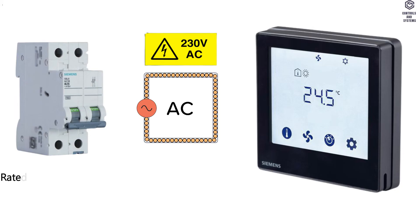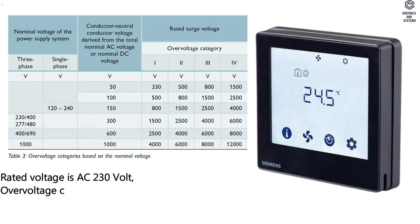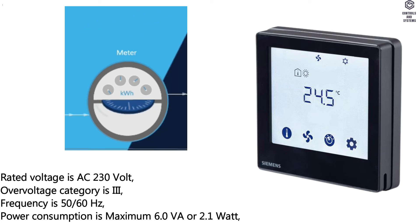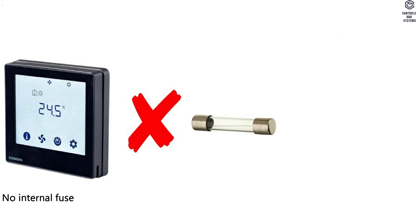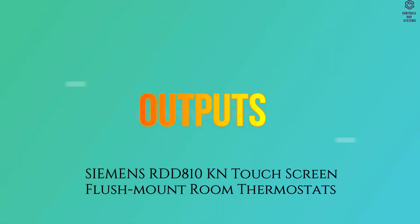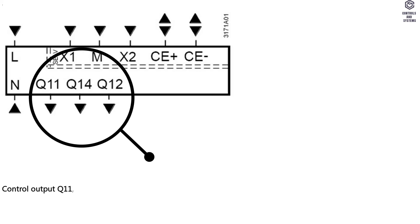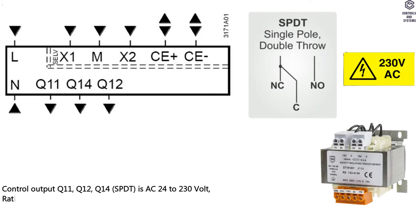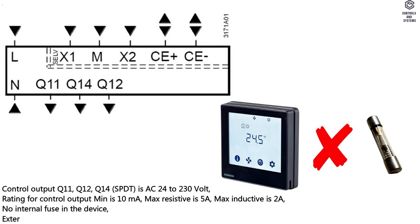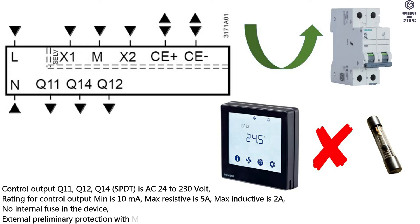Electrical Data: rated voltage AC 230V, overvoltage category 3, frequency 50 or 60 Hz, power consumption maximum 6.0 VA or 2.1 W. No internal fuse in the device; external preliminary protection with maximum C10A circuit breaker in the supply line. Q11, Q12, Q14 SPDT: AC 24 to 230V. Rating for control output: minimum 10 mA, maximum resistive 5A, maximum inductive 2A. No internal fuse; external preliminary protection with maximum C10A circuit breaker in the supply line Q11 required in all cases.